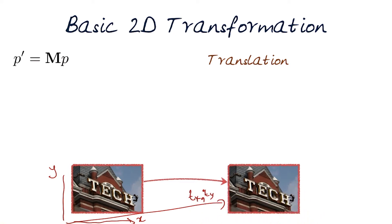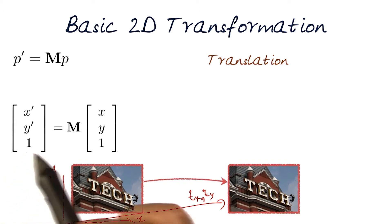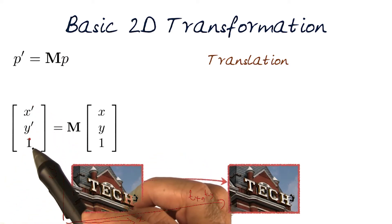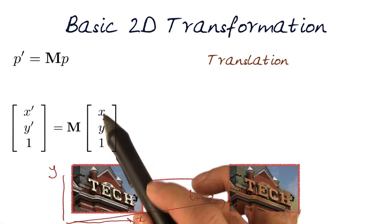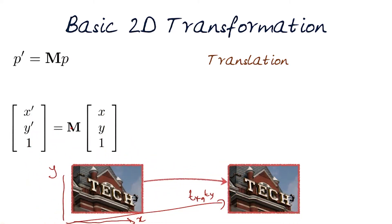How would we represent this in this new homogeneous coordinate system? Well, again, this is what we are interested in: x prime, y prime, 1 equals M times x, y, 1. And of course, now let's think about what M would be.